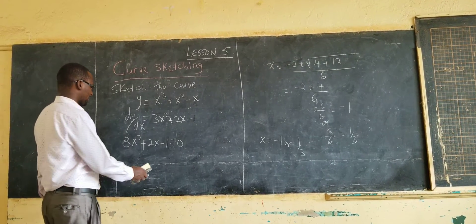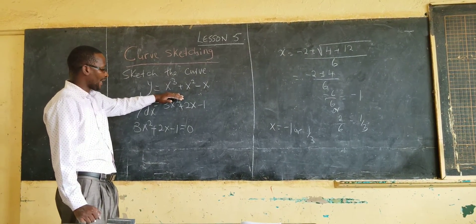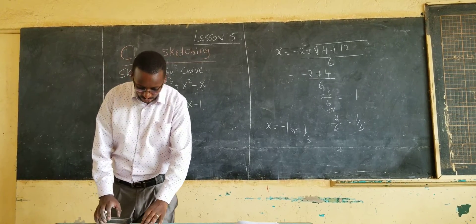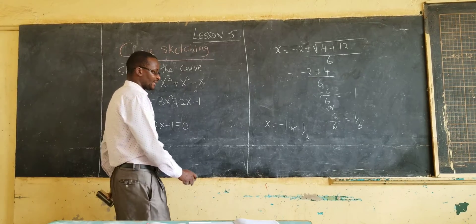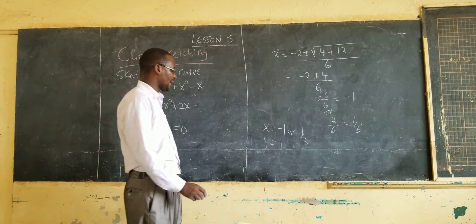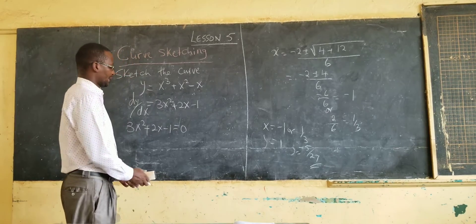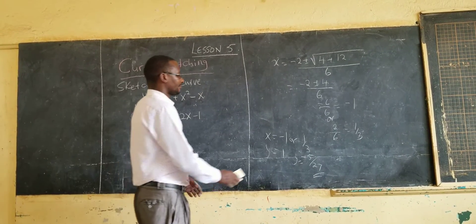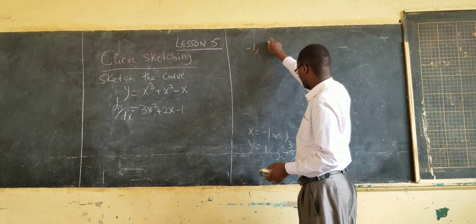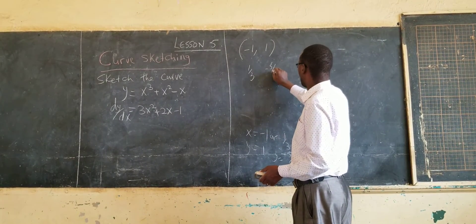We substitute x = −1 into the original equation to get the y-value, and substitute x = 1/3 to get the other y-value. When x = −1, y = 1. When x = 1/3, y = −5/27. So the two turning points are (−1, 1) and (1/3, −5/27).